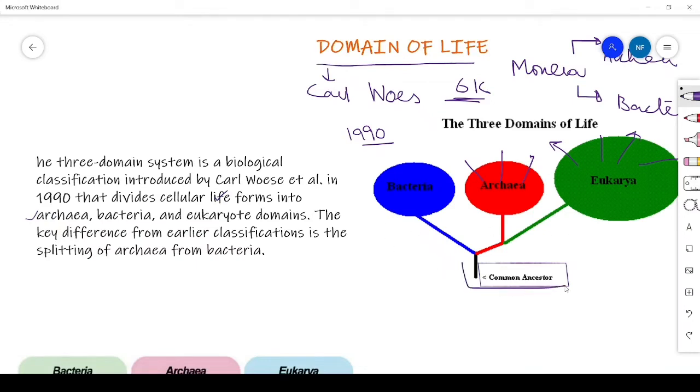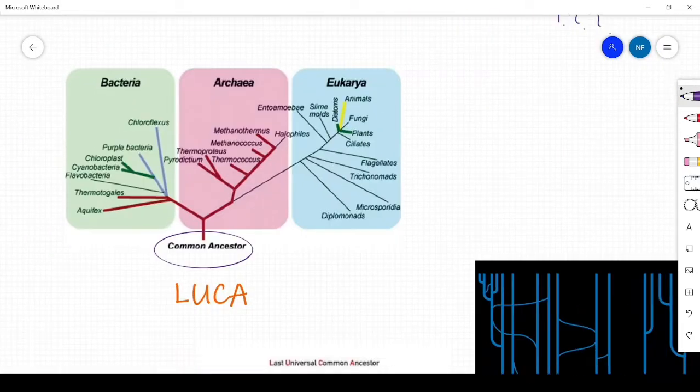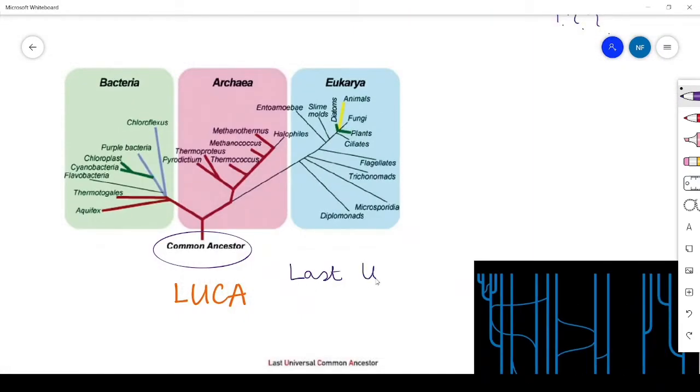He said that every cellular life, there is a common ancestor behind it. Now, who is the common ancestor? Scientists have searched and introduced a term, LUCA. We call it the last universal common ancestor.